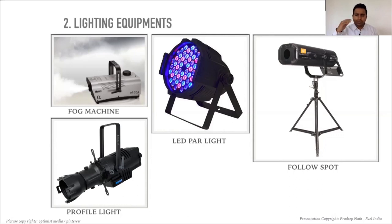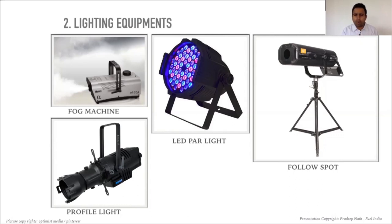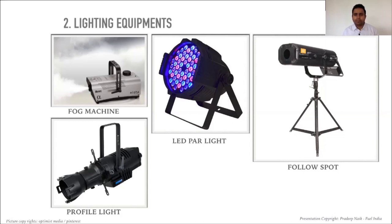Profile lights are fixed onto T-stands, truss, or similar structures, purely focusing on and highlighting the speaker or performer. They provide a combination of white and yellow light so subjects stand out and photographs come out well. For example, with six panelists on stage, you would use six profile lights — each focusing on one panelist so they're well lit and clearly visible. Each lighting element has its own specific purpose.